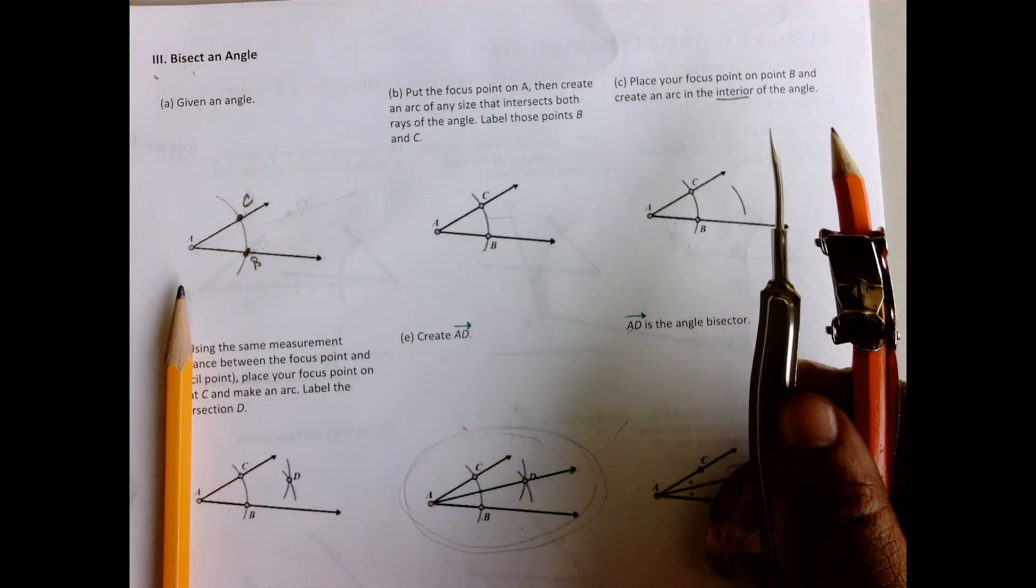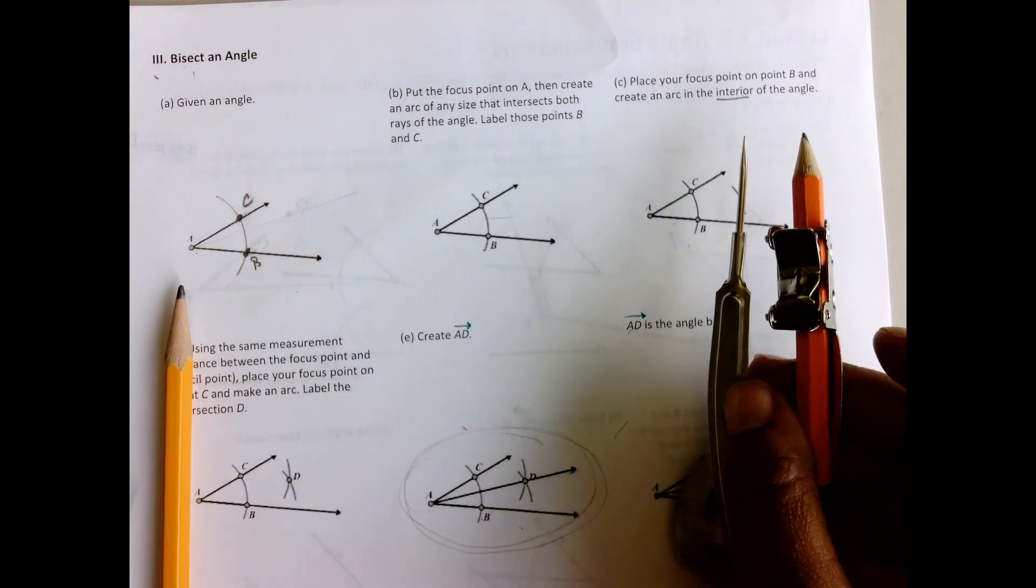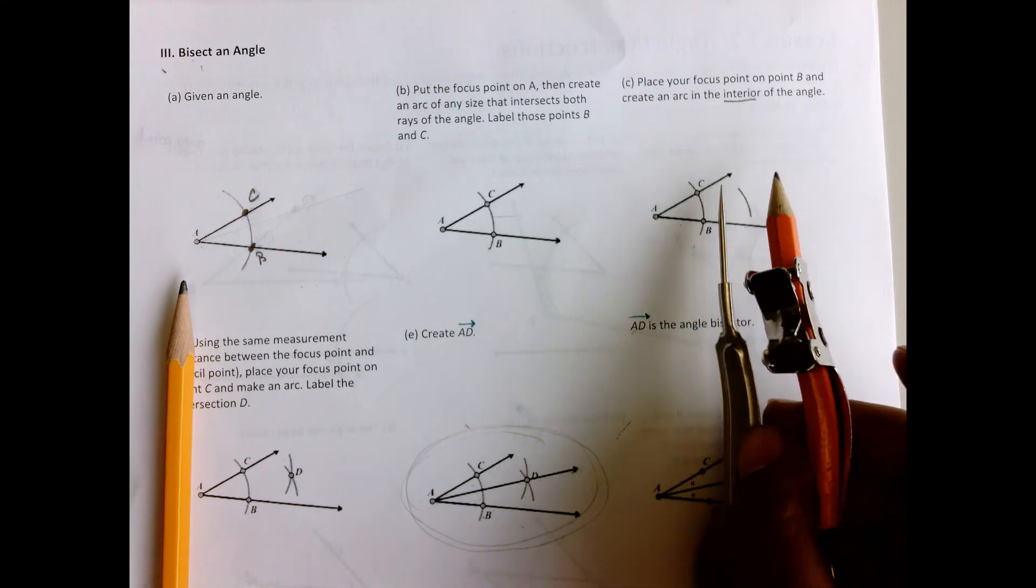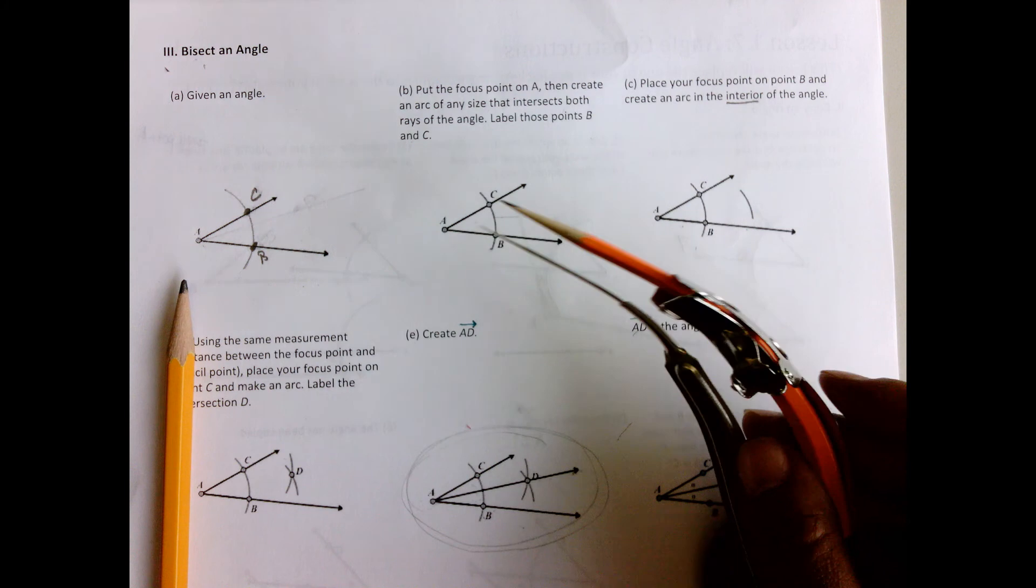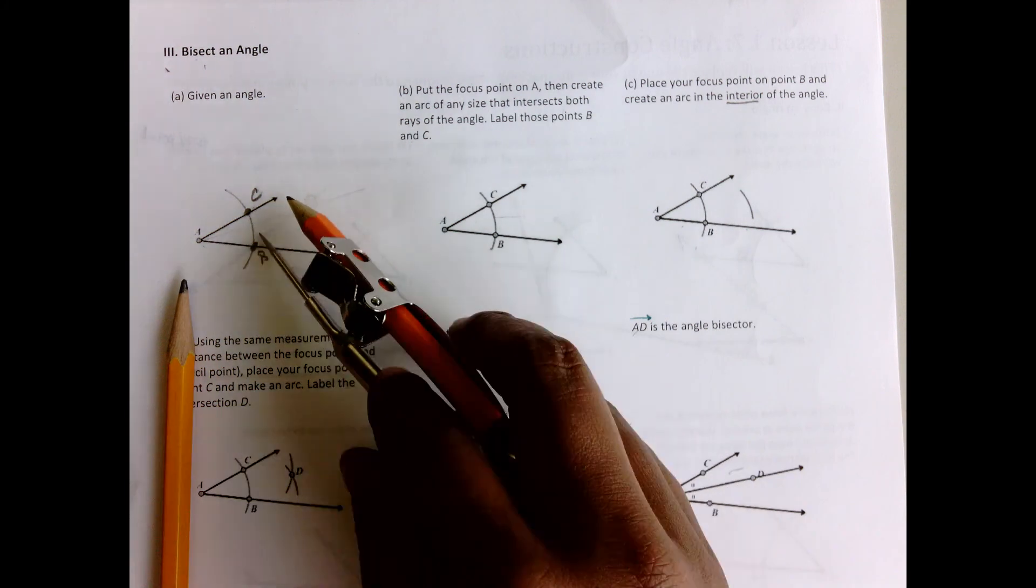All right, so the next step is to place your focus point on B and create an arc in the interior, or in the inside, the space in between these two rays in the interior of the angle. So focus point on B and I'm going to create an arc.